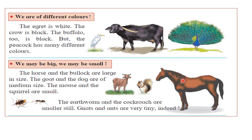Animals also differ in size. The horse and the bullock are large in size. The goat and the dog are medium size. The mouse and the squirrel are small. The earthworm and the cockroach are smaller still. Gnats and ants are very tiny indeed.